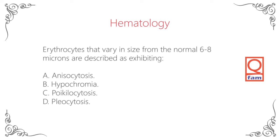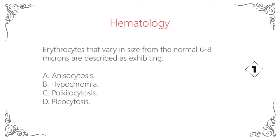Erythrocytes that vary in size from the normal 6 to 8 microns are described as exhibiting: A. Anisocytosis. B. Hypochromia. C. Poikilocytosis. D. Pleocytosis. The answer is A — Anisocytosis.